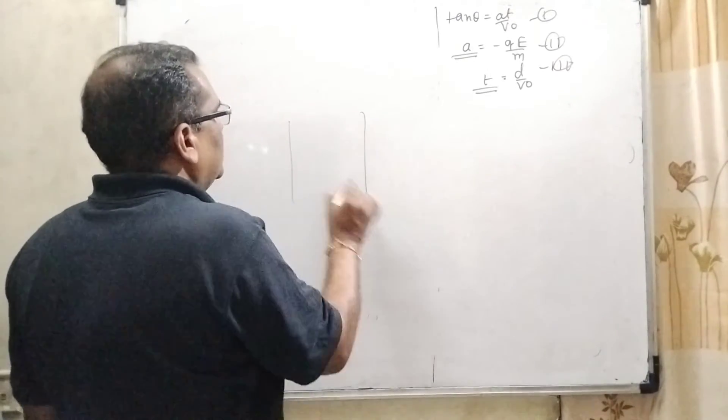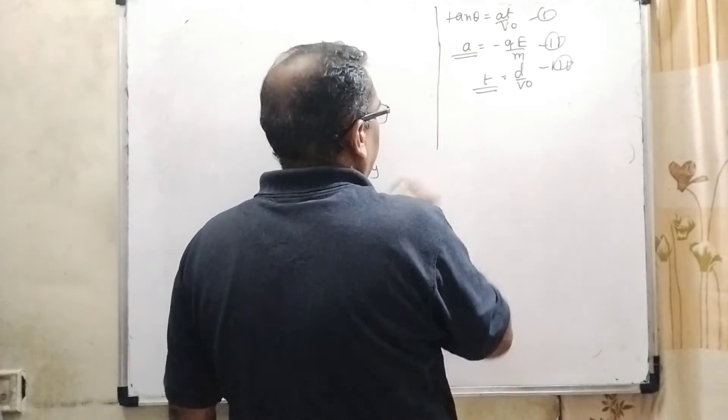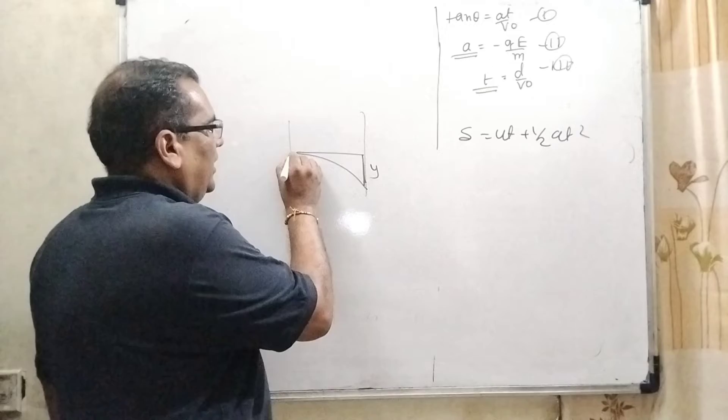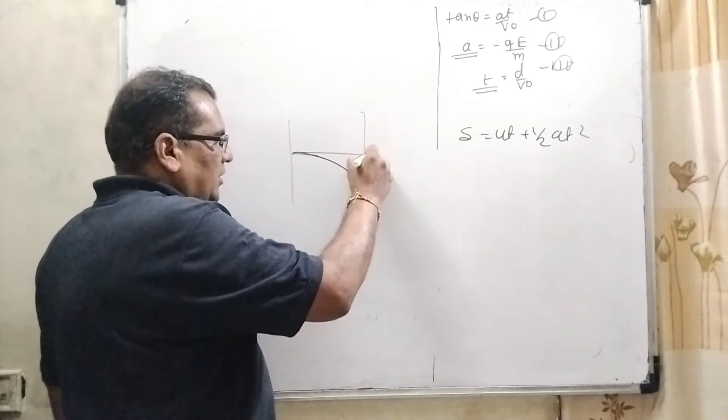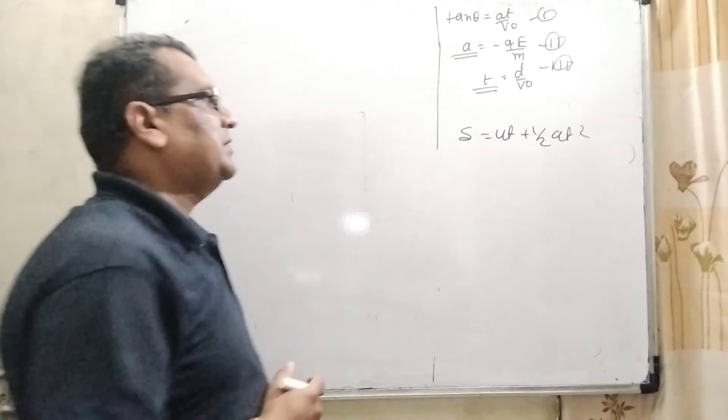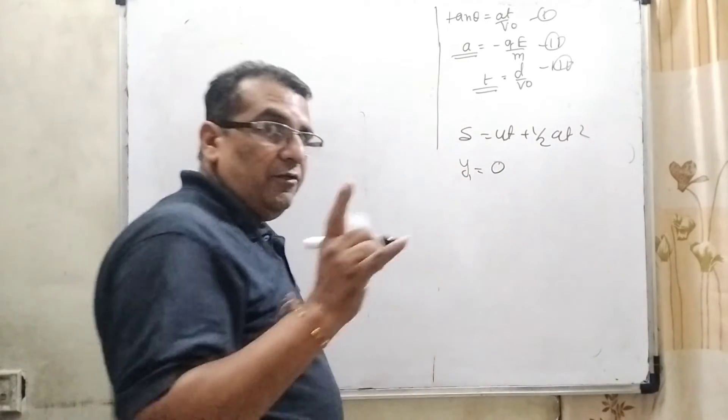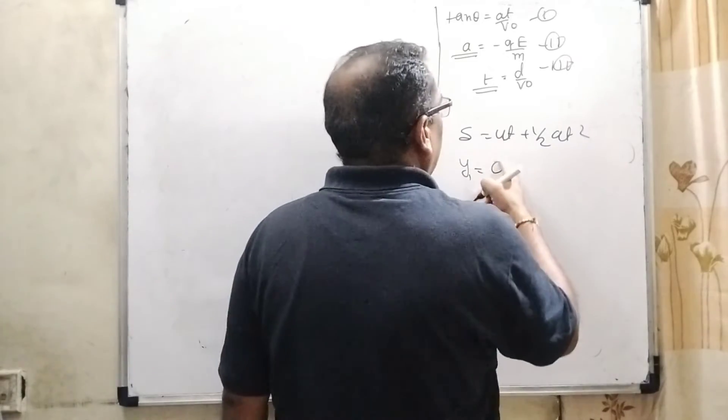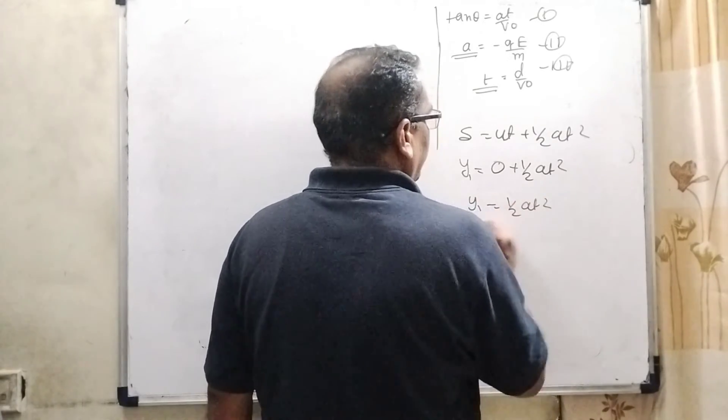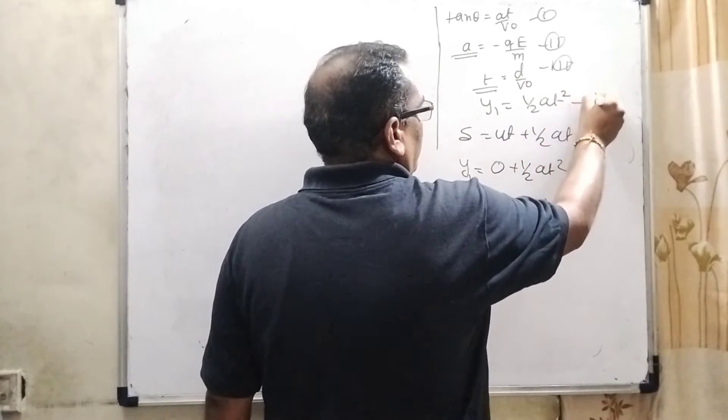Now, for the cover this distance y, we are using equation of kinematics, second equation of kinematics: s equal to ut plus half at square. When the charged particle enters and moves in the y direction, we have to find out this y. So here we are using s equal to ut plus half at square. So y1 equal to initial velocity zero, initial velocity of y component, that is very important. So here zero plus 1 by 2 at square. y1 equal to 1 by 2 at square. So here y1 equal to 1 by 2 at square. That is fourth equation.